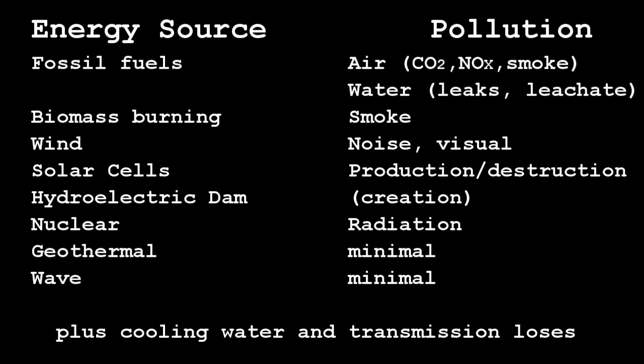Summing up energy sources and pollution: fossil fuels — coal, oil, and gas — produce air pollution, and the fuel could leak, or water could pass through where the fuel is kept and become polluted; that's called leachate. Biomass burning, which is burning wood, produces smoke among other pollutants. Wind, as we discussed, involves noise and visual pollution.